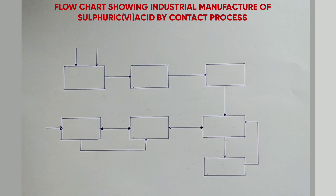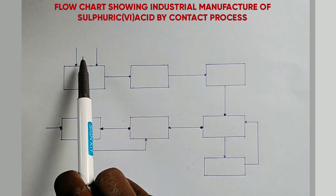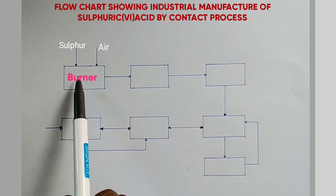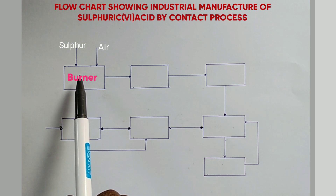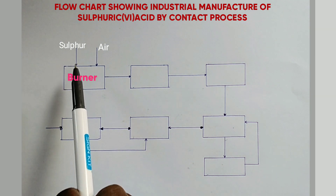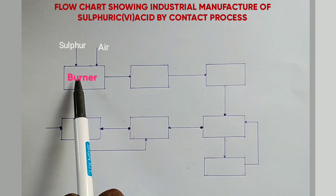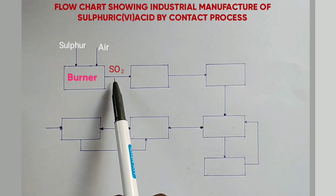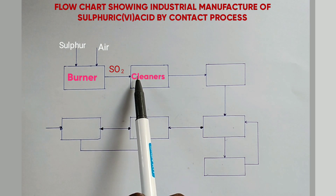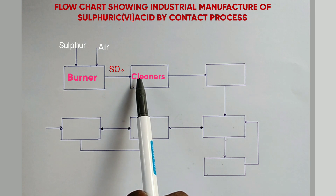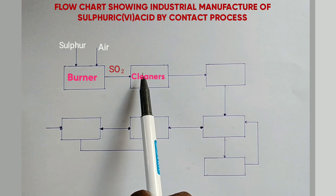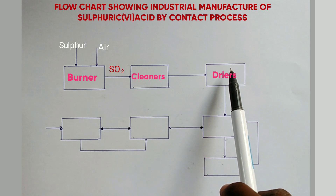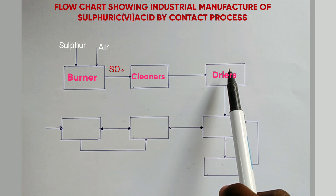Industrial manufacture of sulfuric acid by the Contact Process: the raw materials, sulfur and air, enter the burner where sulfur reacts with oxygen to form sulfur dioxide. We can also use a metal sulfide, e.g. zinc sulfide, which reacts with oxygen to form zinc oxide and sulfur dioxide. The SO₂ and air mixture is pumped into the cleaners, which remove dust particles to prevent poisoning of the catalyst. Then it is pumped through the dryer, which contains concentrated sulfuric acid to dry the gas mixture by removing water vapor, since the gas is highly soluble in water.